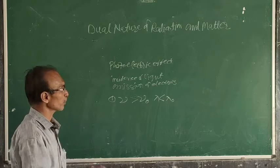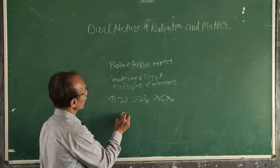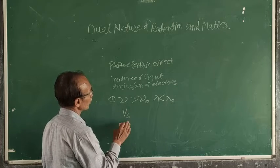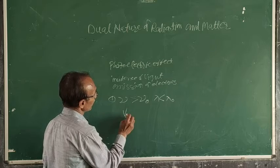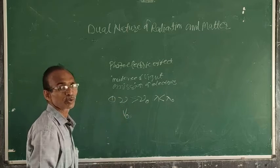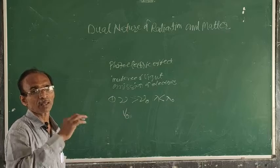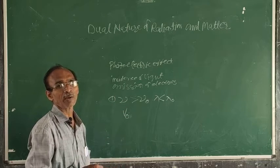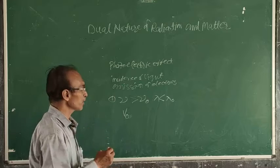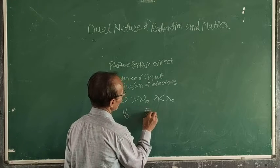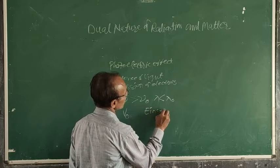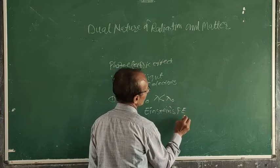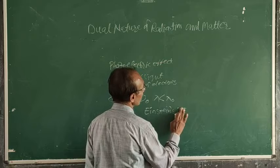Next is the application of the voltage. From the voltage, we came to know the stopping potential, denoted by Vs or V₀. This process was explained by scientist Einstein, and so we have Einstein's photoelectric equation.